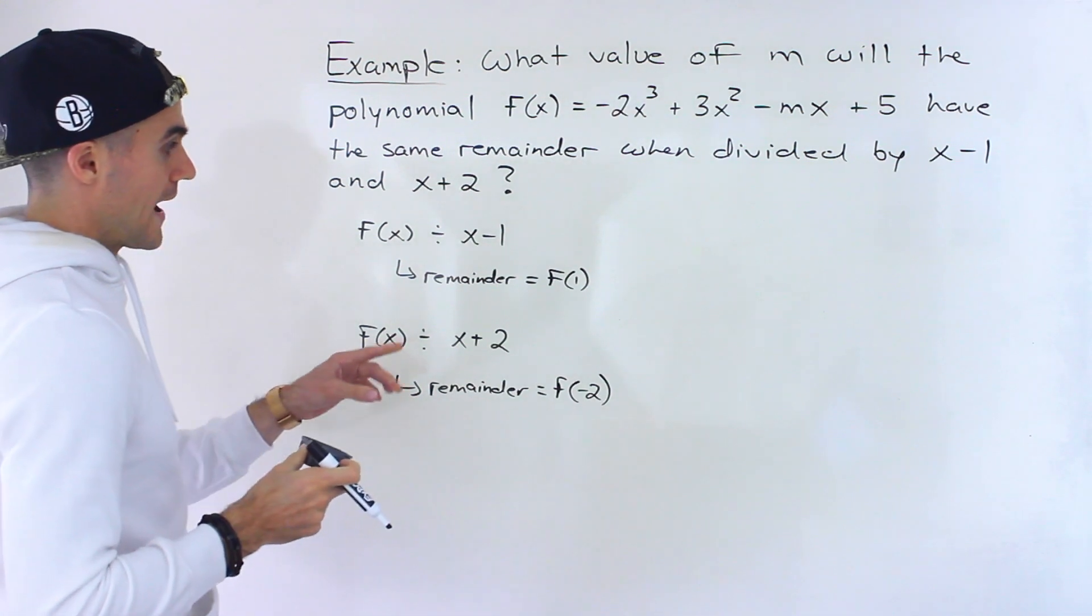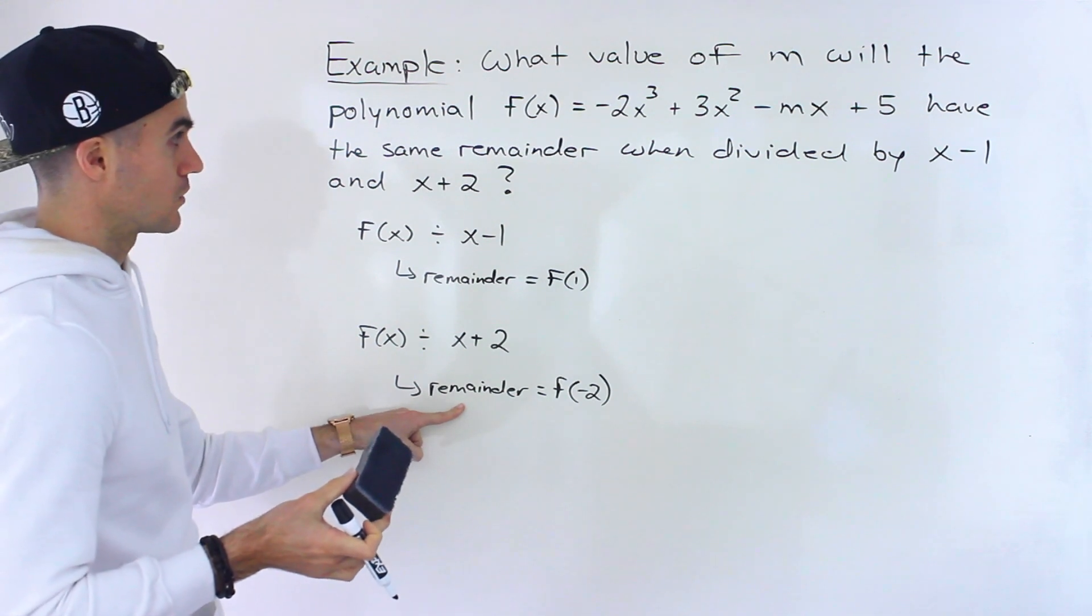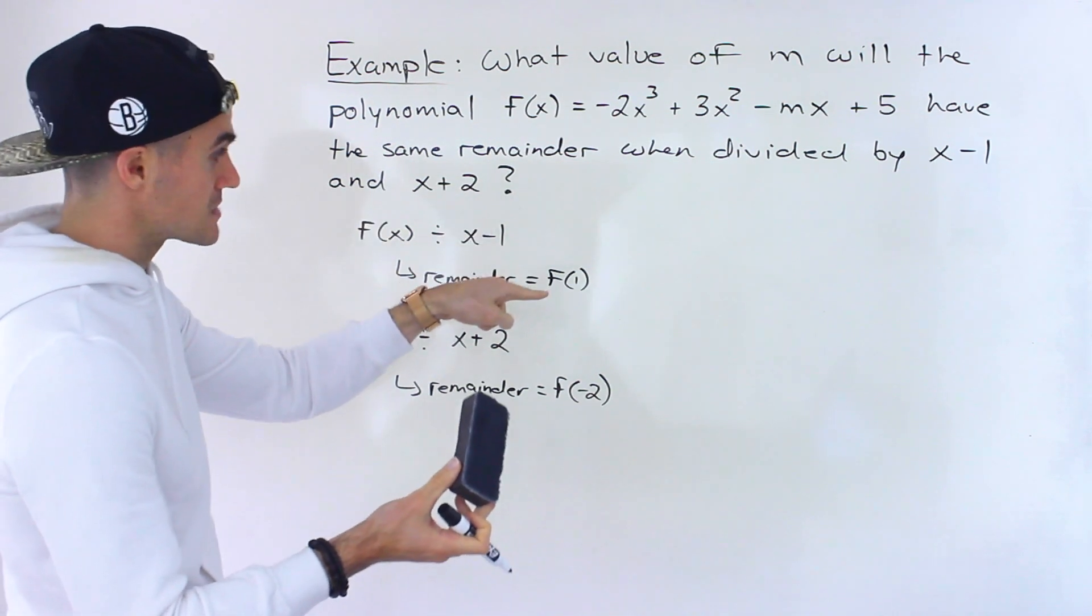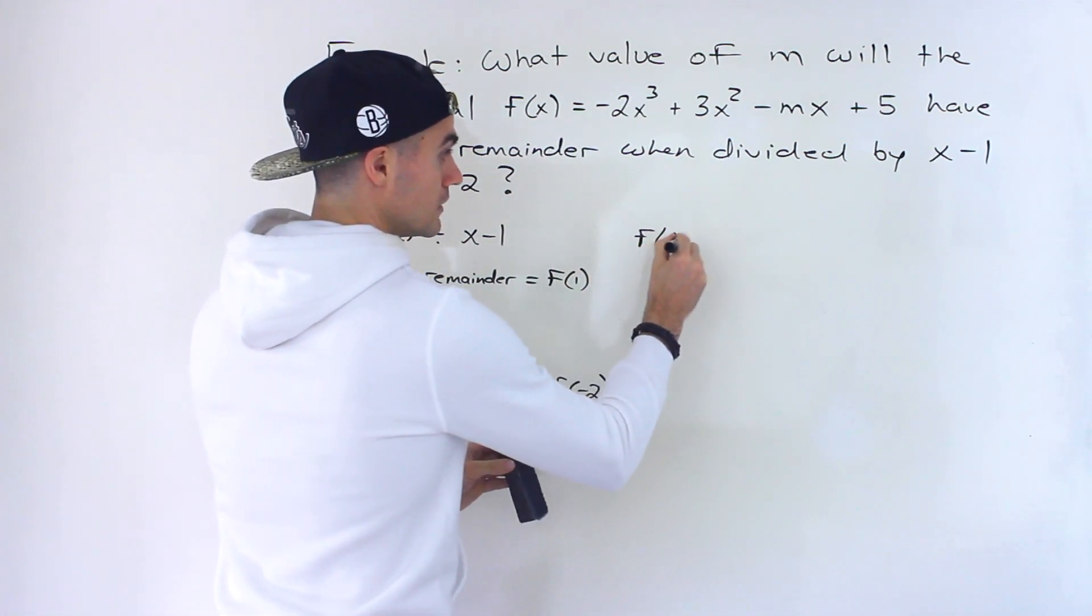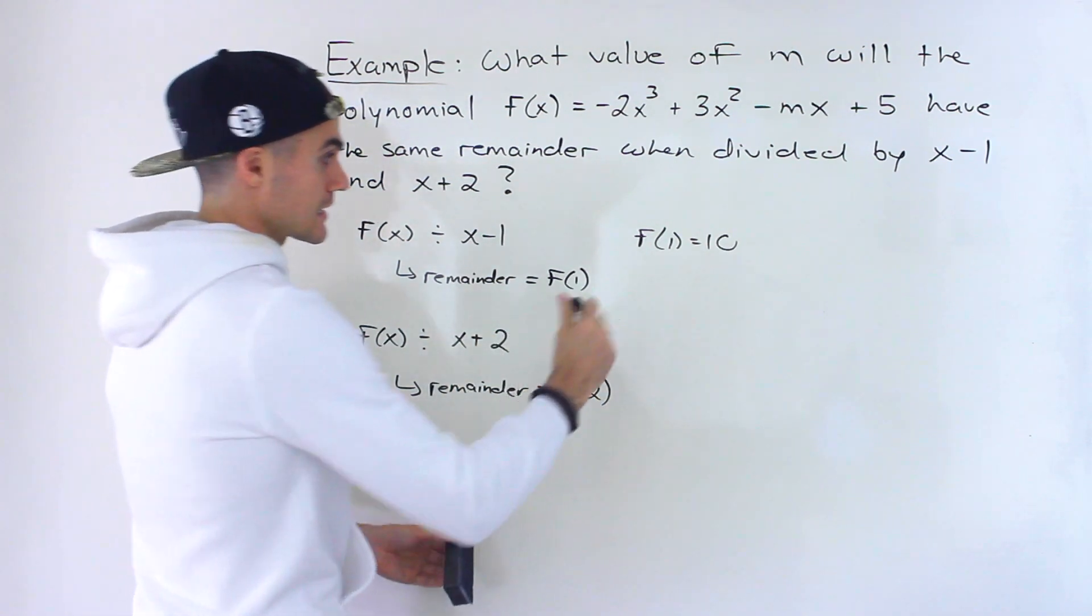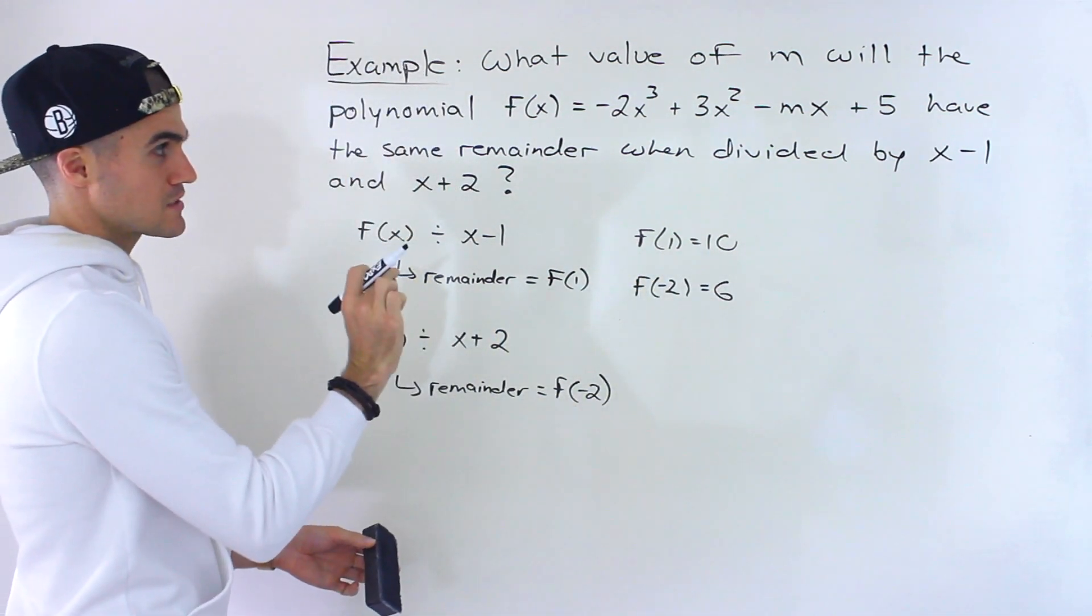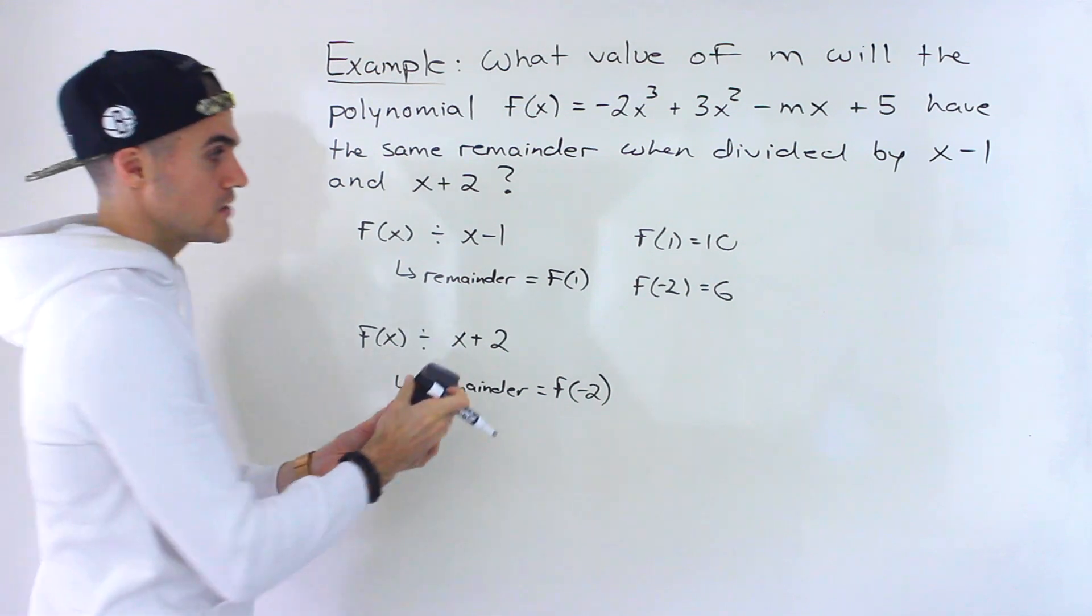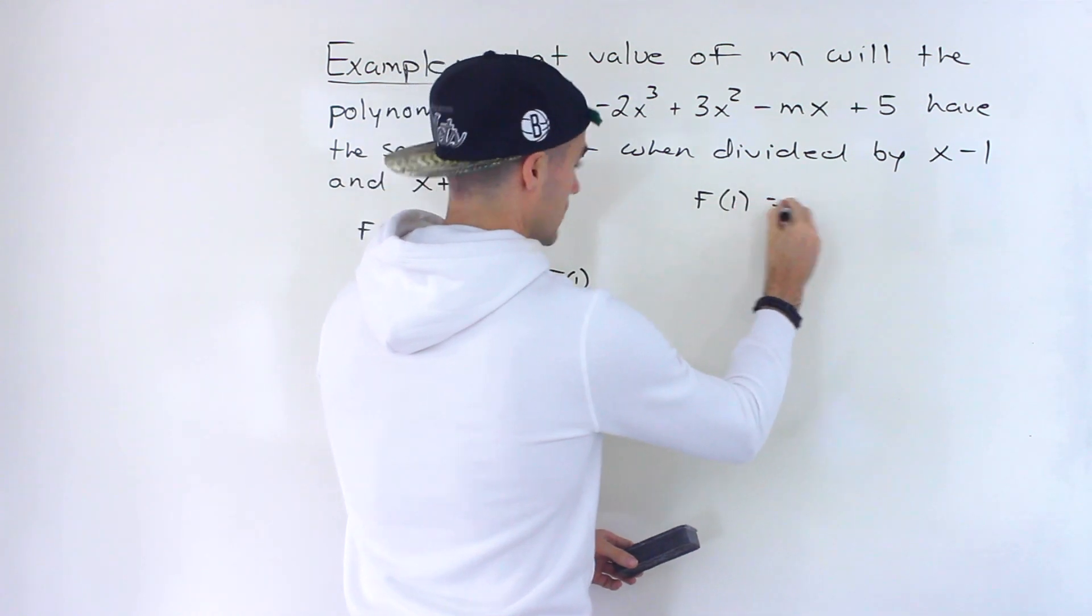We're told that these remainders are actually the same. A lot of times you'll get questions where they'll say the remainder when divided by x - 1 is equal to 10, then you would write f(1) = 10. But in this case we're not given the specific remainder, but we are told that these remainders are the same. So what's the equation that we can make? Well, we know f(1) has to equal f(-2).